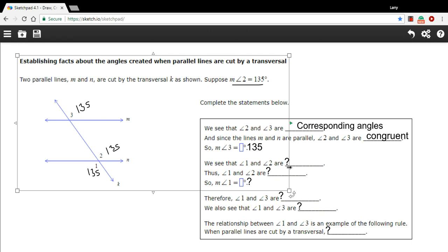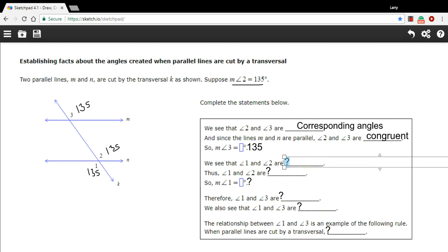Now, it says we see that angles 1 and 2 are what? The relationship between 1 and 2 is that they're vertical angles. And vertical angles are also congruent. They also have the same measure. So the measure of angle 1 is also 135.